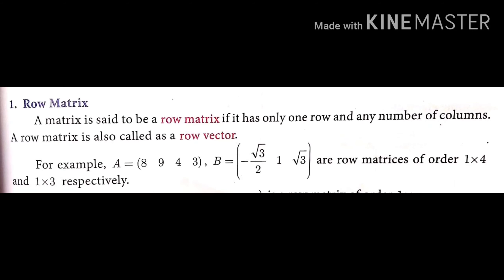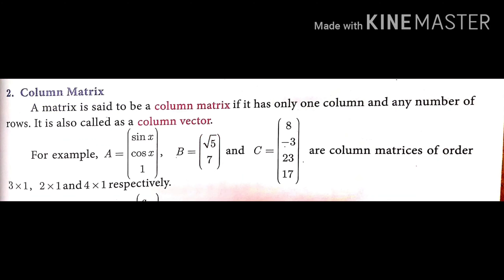See the examples: matrix A is [8, 9, 4, 3] and matrix B is [-√3/2, 1, √3]. The first one has order 1×4 — one row and four columns. The second one is 1×3. These types of matrices are called row matrices.